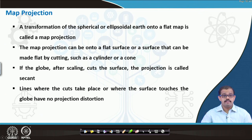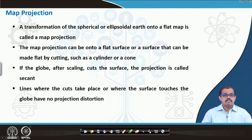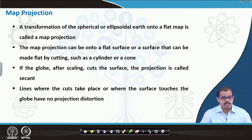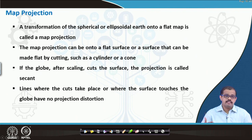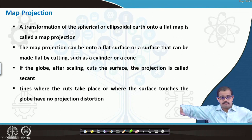A map projection can be onto a flat surface or a surface that can be made flat by cutting, such as a cylinder or a cone. If the globe after scaling cuts the surface, the projection is called secant. Keep this in mind — this is one of the concepts that everyone has to know. Lines where the cuts take place, where the surface touches the globe, have no projection distortion at all, but the farther surfaces will have very huge distortions.